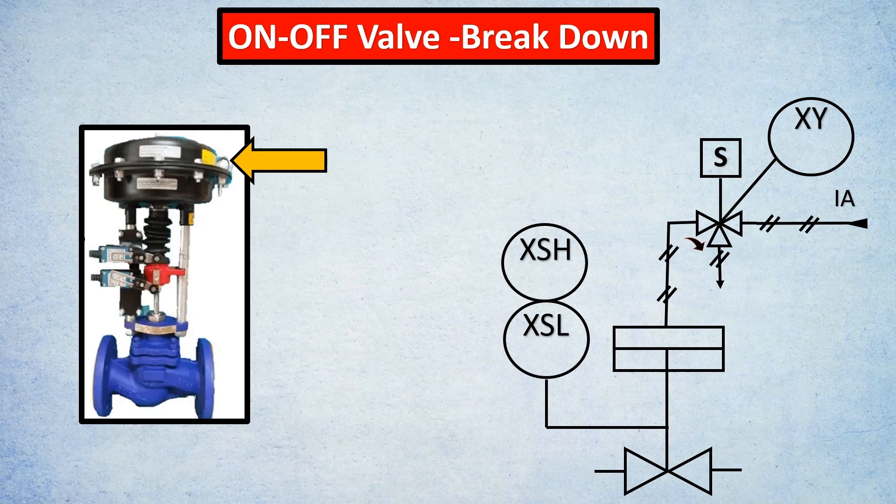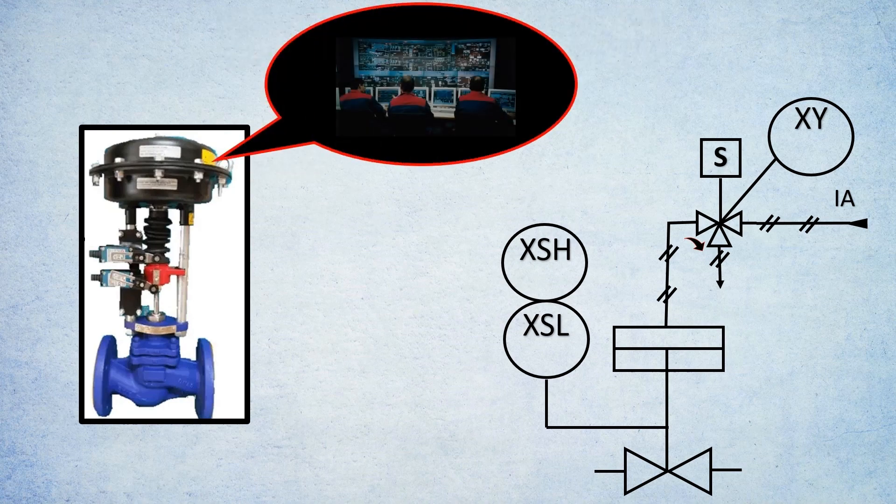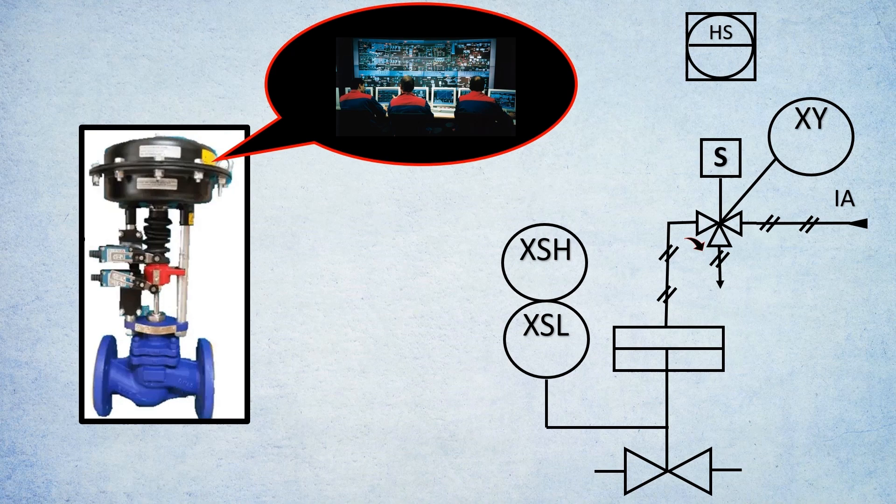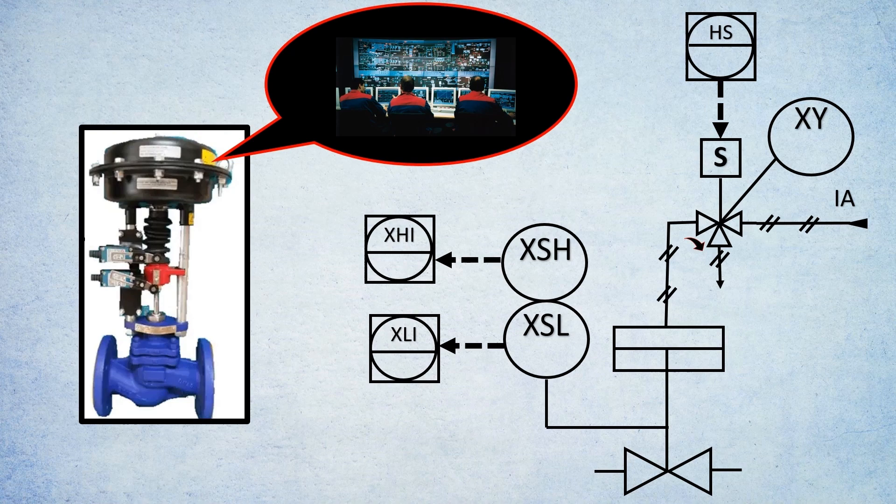So O stands for open and C stands for close. Next, you have the control system. The operator sitting in his cabin gives the first signal, called HS. It's a switch he presses on the control system that activates the solenoid. Then these two limit switches send control signals to the control system, letting the operator know the valve has functioned as indicated. It's feedback to the operator that the intended function is happening.